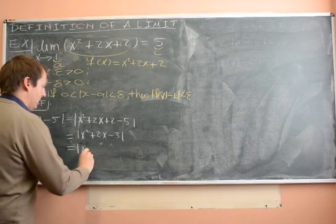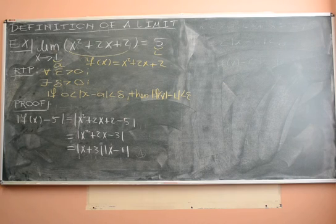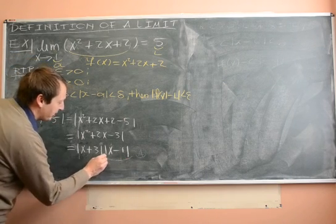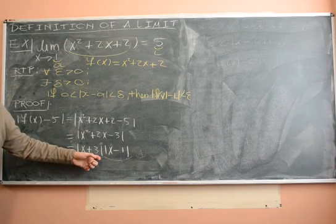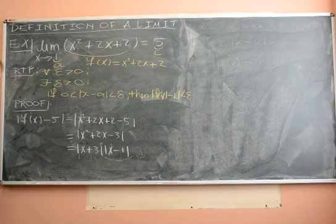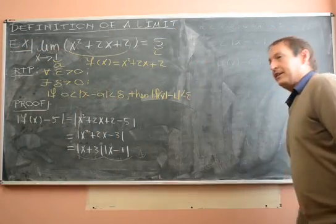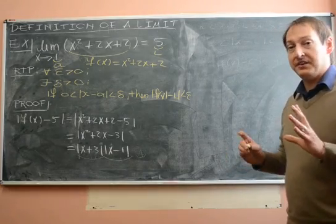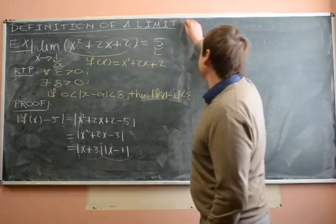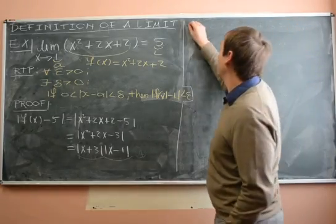Factoring gives us (x + 3)(x − 1). This is the term we're after — we want that x minus 1 term. Remember, our delta shouldn't depend on x; it should depend only on epsilon. So we need to somehow get rid of the (x + 3) term. What we do is restrict the values of x.